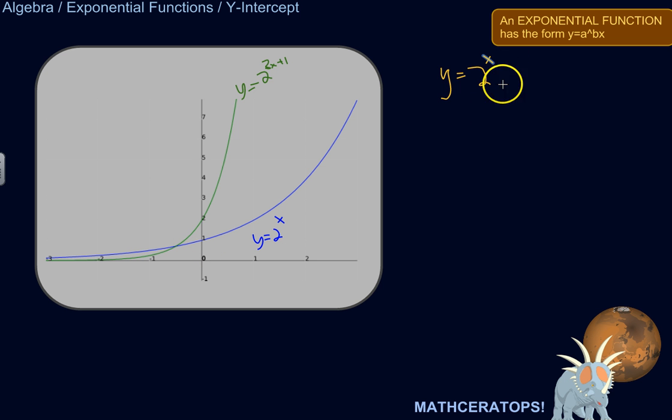At the y-intercept, x equals 0. So let's set x equal to 0. y equals 2 to the power of 0. We're plugging in 0 for x. What is anything to the power of 0? It's 1. So y equals 1.